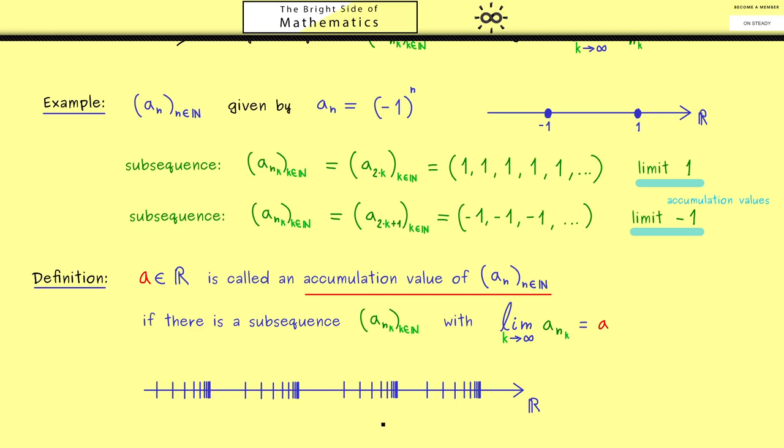Another thing I should really tell you is that there are a lot of different names for the same thing. For example not so surprising some people call it a cluster point, or also accumulation point instead of value. However a little bit more confusing is the term limit point. Of course it makes sense but please be careful you could have many limit points for one sequence an. Therefore to avoid this confusion some people use the term partial limit. However I will stay at the term accumulation value.